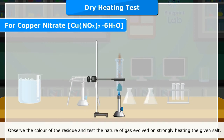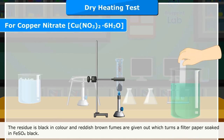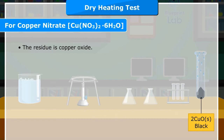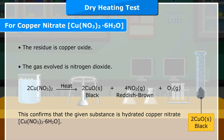On strongly heating, the residue is black and reddish brown fumes are given out which turn a filter paper soaked in FeSO4 black. The residue is copper oxide and the gas evolved is nitrogen dioxide. 2Cu(NO3)2 on heating gives 2CuO (solid, black) + 4NO2 (gas, reddish brown) + O2 (gas). This confirms the given substance is hydrated copper nitrate, Cu(NO3)2·6H2O.